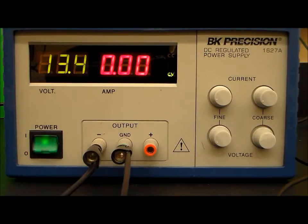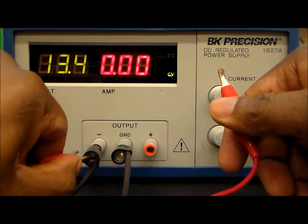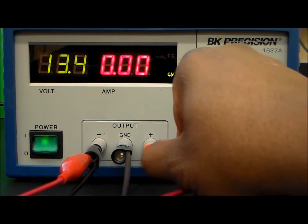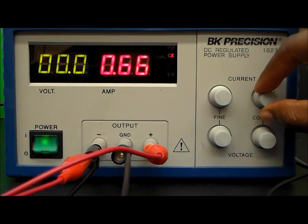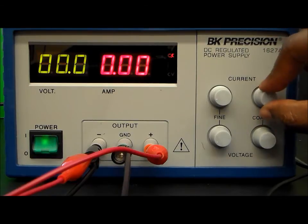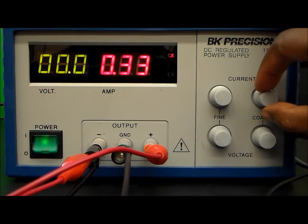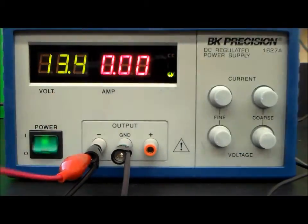In order to set our current limiting here, what we want to do is connect onto the negative terminal and then to the positive terminal over here. And we can adjust the amount of current, the maximum amount of current coming out of the power supply. And so that would be the max.